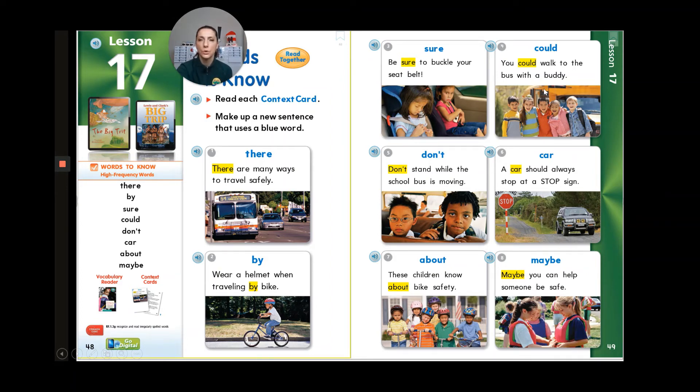Number four, could. You could walk to the bus with a buddy. This is tricky for people. Remember, could is spelled like would, C-O-U-L-D. Don't forget the U. If you forget the U, you've got cold. Number five, don't. Don't stand while the school bus is moving. This is a contraction, and it stands for do not. We put them together, the do and the not. We get rid of the O and we put an apostrophe where the O was.